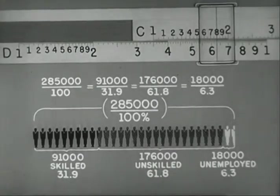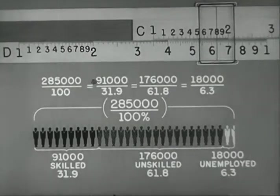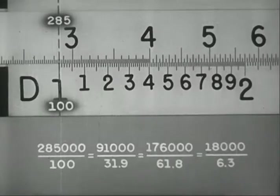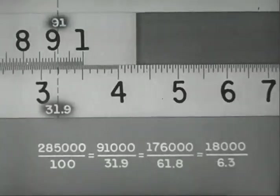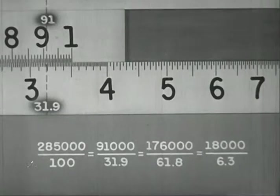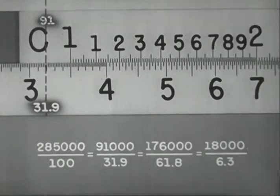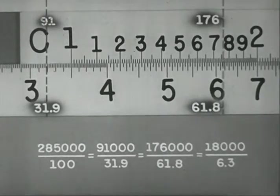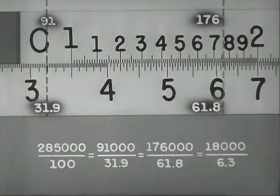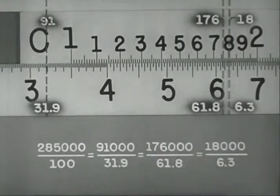Notice that with any setting of the rule, all coinciding readings are in the same ratio. With this setting, 285 is to 100, as 91 is to 31.9, and with a change of index, which leaves the ratio unchanged, as 176 is to 61.8, as 18 is to 6.3.